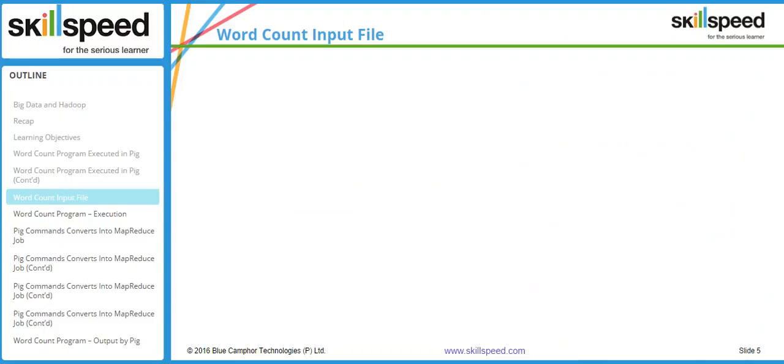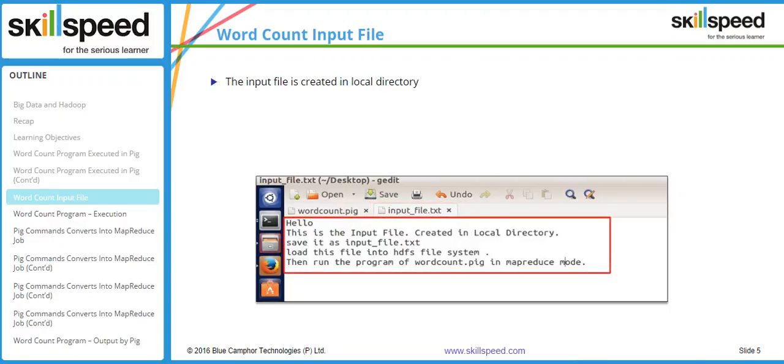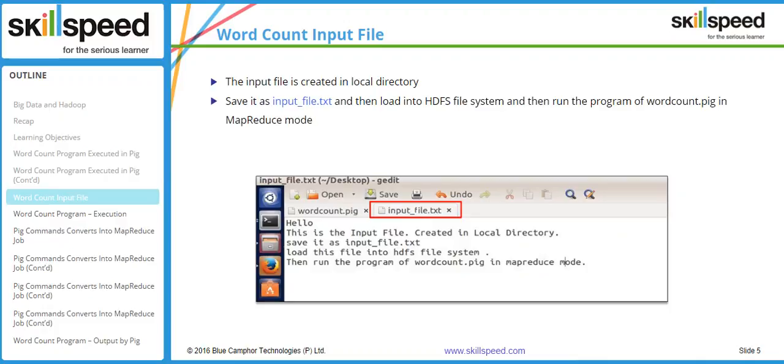To test what we have done, I have created a file called input_file.txt. This file has some sample text such as 'hello this is the input file created in local directory', and so on. We will save this file in the actual distributed file system (HDFS) and also make sure that we have our Pig script ready.